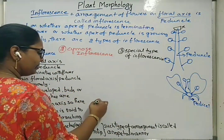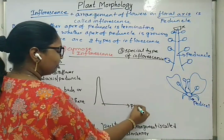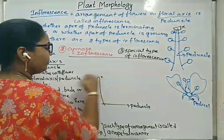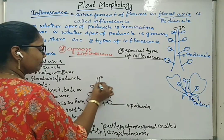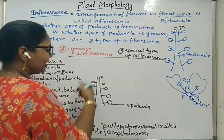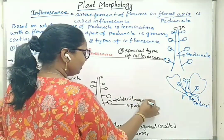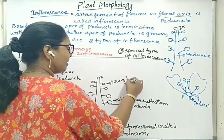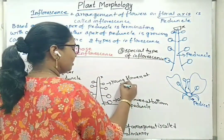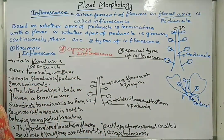Looking at the structure of racimose inflorescence: if this is the peduncle or main floral axis, it does not terminate with any flower. Older flowers are at the bottom and young flowers or branches are at the upper side near the tip region. Such an arrangement is called the acropetal manner of arrangement.